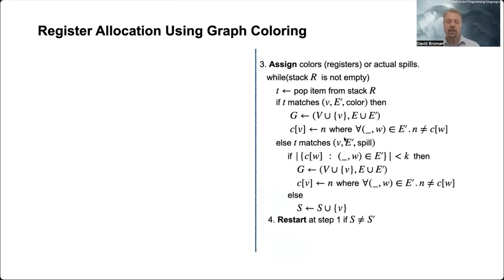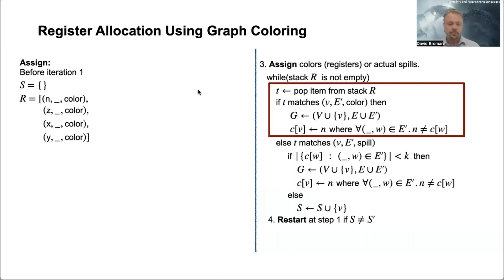So the next step is to then assign colors or decide to do the actual spill. And we do that by having a while loop where we check until this R is empty, so we're continuously popping from this stack now. So let's see if we're popping - we're popping it to t. And now t is n, so n is the vertex that we have here.